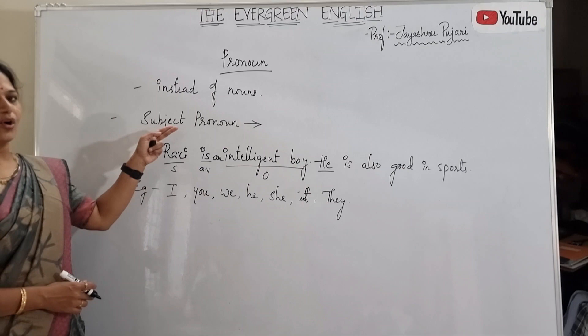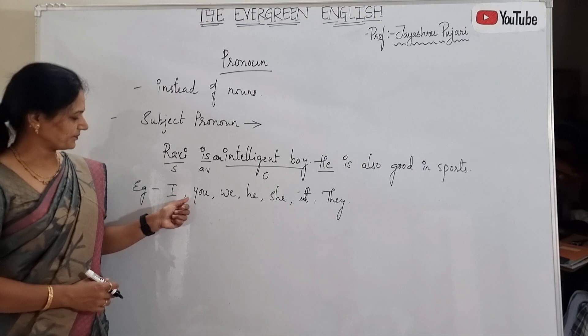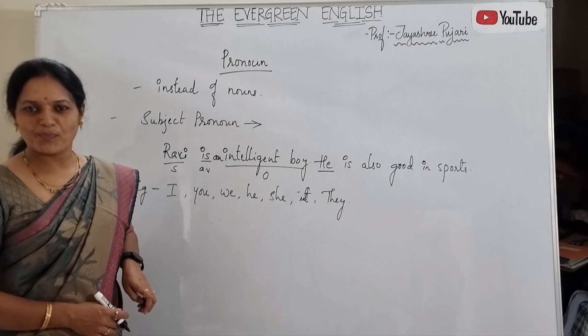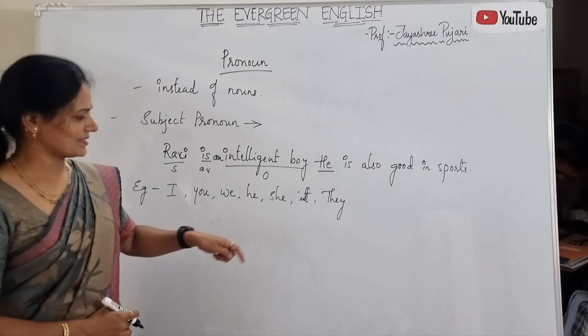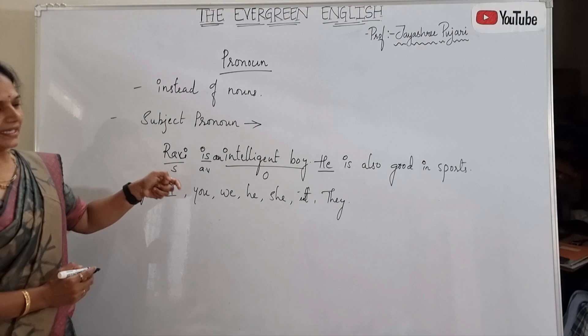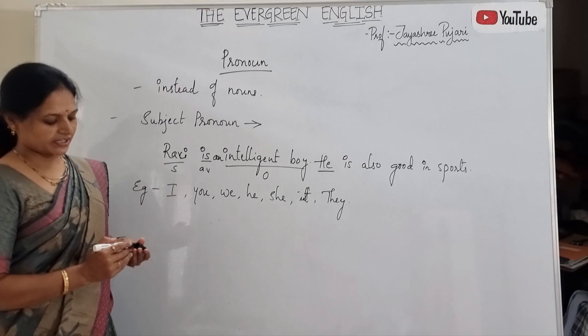Lots of examples you can make. I am a lecturer. You are students. We are intelligent persons in this world. He is an intelligent boy. He is a student. He is an entrepreneur. She is a beautiful girl. It is running too fast. They are the creatures of this world. These are subject pronouns — words which take the place of the subject.